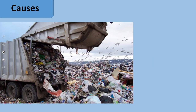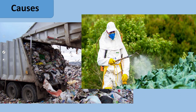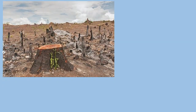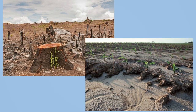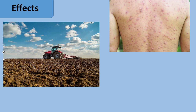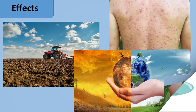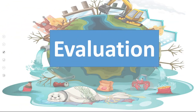Here you can see a summary of land pollution: the causes of land pollution include dumping of garbage anywhere, spraying of pesticides and herbicides, deforestation, and soil erosion. The effects include infertility of land, skin diseases, fever, and ecosystem imbalance. These are all the effects of land pollution.